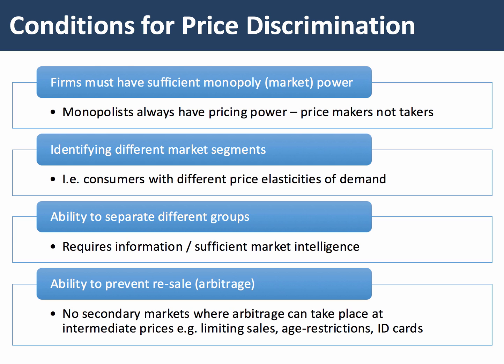Price discrimination also requires firms to have quite a lot of information — quite a lot of market intelligence — about consumer behavior, about buying habits, about the sensitivity of consumers to different market conditions. The internet is giving companies a huge amount of data on consumer preferences and actual buying behavior.